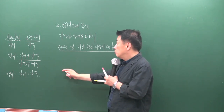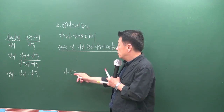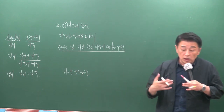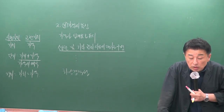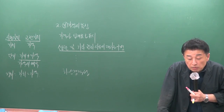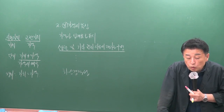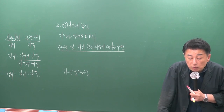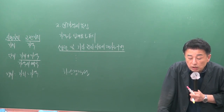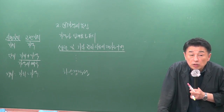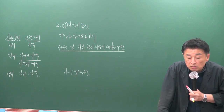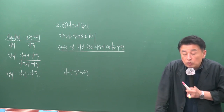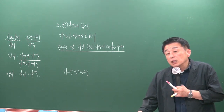부동산 가격은 수요가 전무하더라도 일정 수준 이하로는 떨어지지 않습니다. 4번 문제 1번 보기에서 부동산 가격은 교환의 대가인 가격 외에 용익의 대가인 임료가 중요한데, 이는 영속성에 근거합니다. 4번 보기에서 동일한 부동산에 여러 개의 권리가 병존할 때는 각각의 가격이 형성될 수 있다고 명시되어 있습니다.